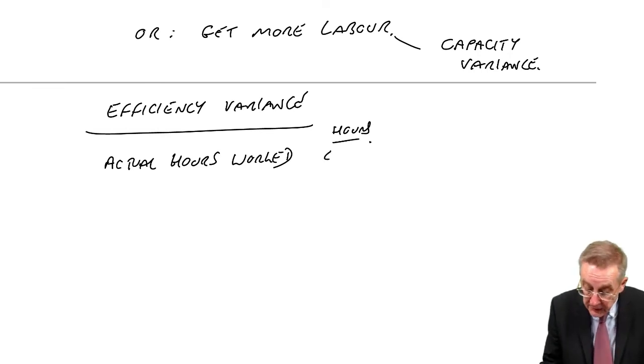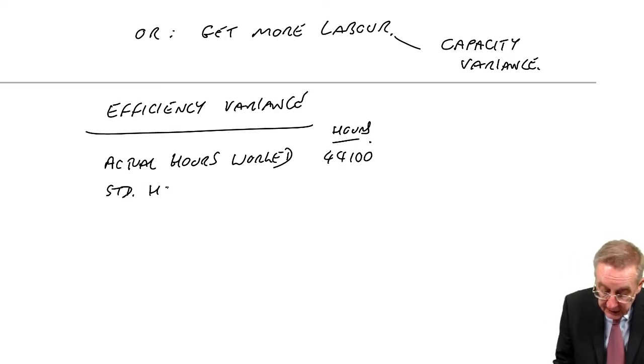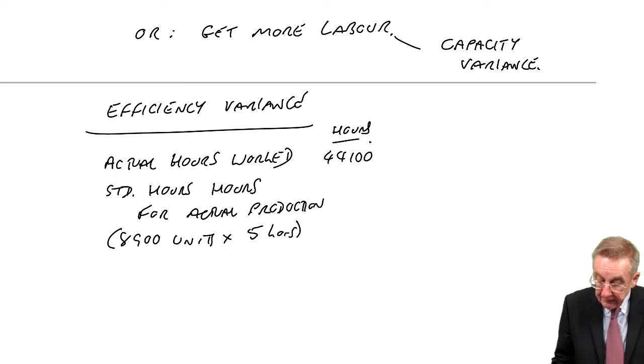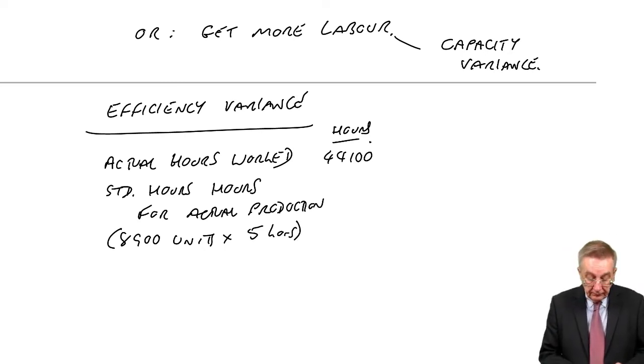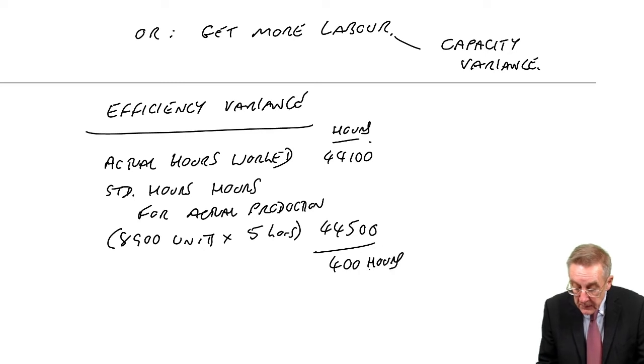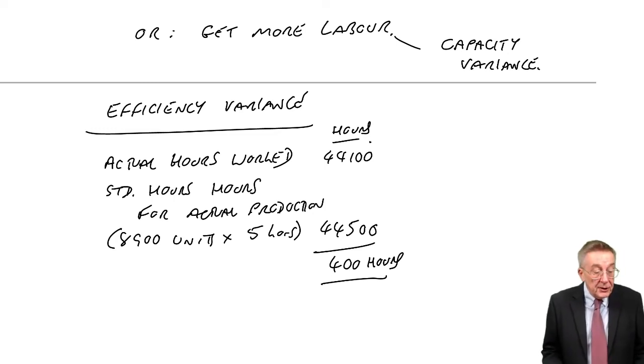We compare the actual hours worked. Look back at the question. They actually worked 44,100. To check whether they worked faster or slower, we compare with the standard hours for the actual production. They produced 8,900. This should have taken five hours a unit. And so, this should have worked 44,500 hours. They have worked faster. We've saved 400 hours. And if you do look back later, labour, we got this saved 400 hours. For labour, it was saving them at $5 an hour. For variable overheads efficiency variance, we'd save 400 hours and that saved us at $2 an hour.